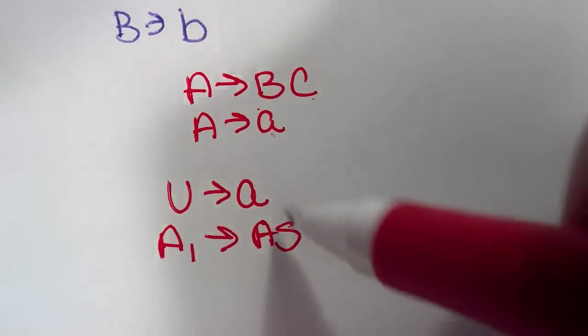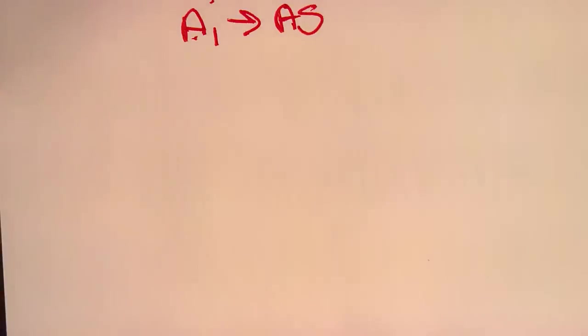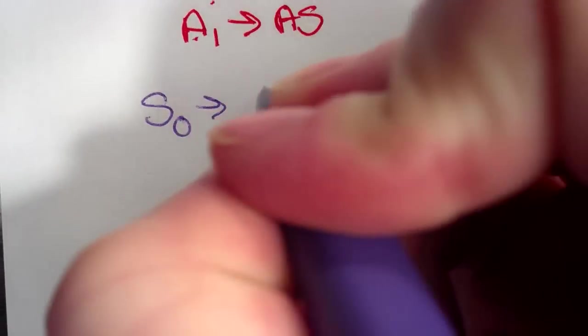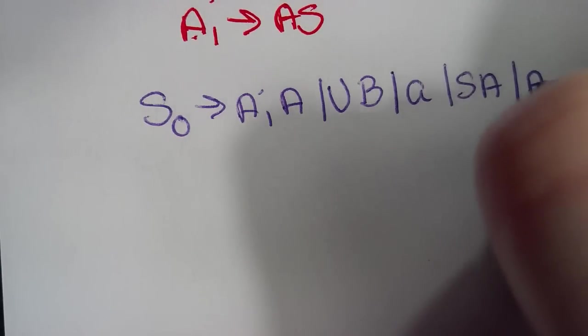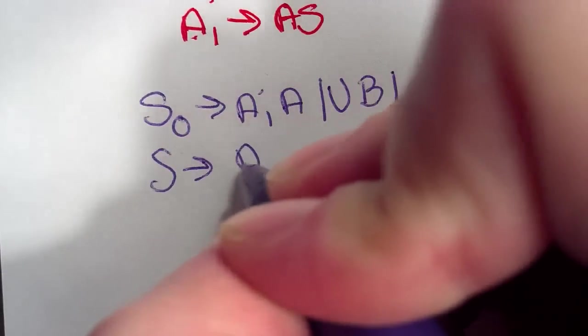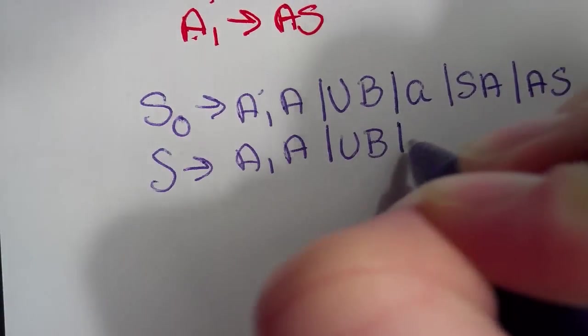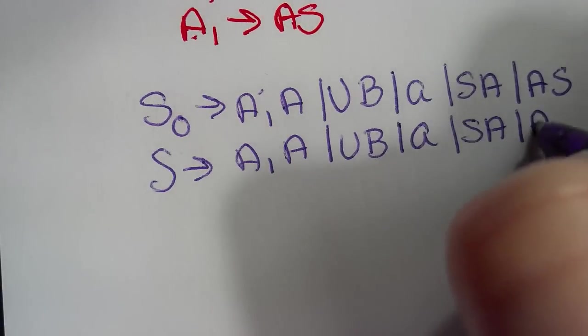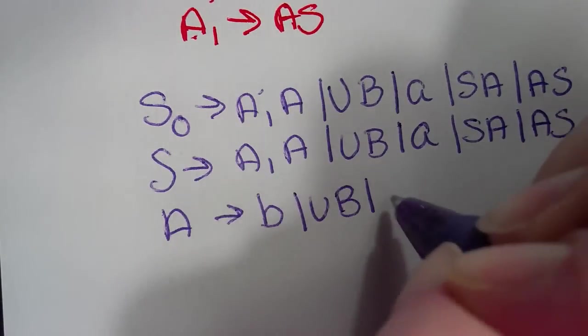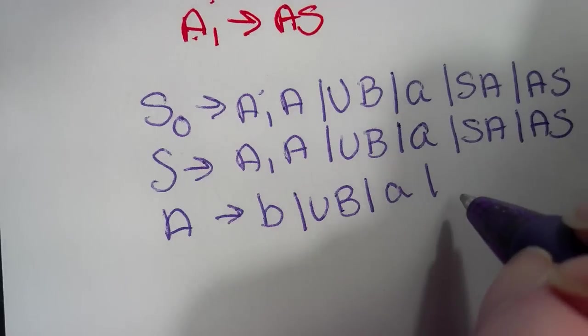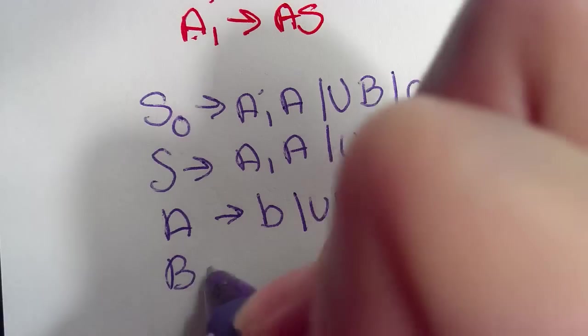And what you do is you take these new variables and you replace them in our equation. So our new equation in the end is going to be S naught points to A1A or UB or A or SA or AS. And then S points to A points to lowercase B terminal or UB or A or SA or AS. And B points to B and then we add in our new variables that we added.